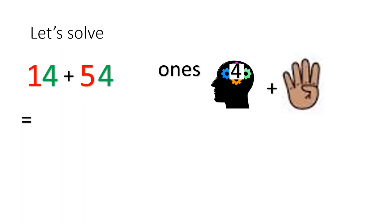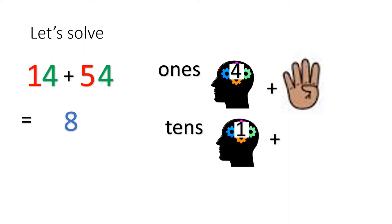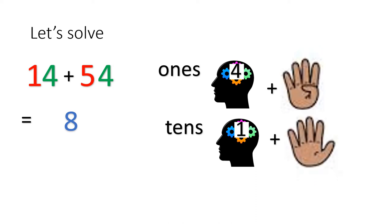Let's count the number after 4: 5, 6, 7, 8. So you write 8. Now let's solve the tens — put 1 in your head and 5 on your fingers. What's the number after 1? Let's close when you count: 2, 3, 4, 5, 6. It is 6. So the answer is 68.